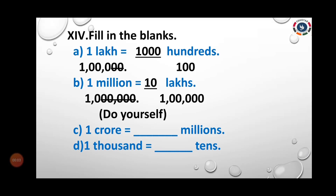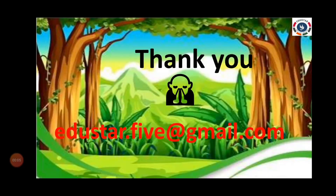Domulator 14 — fill in the blanks. A: 1 lakh = 1,000 hundreds — convert 1 lakh to numerals (1,00,000), then 100 has 2 zeros; cancel 2 zeros from the lakh, and the remaining gives the answer. B: 1 million = 10 lakhs. C: 1 crore = ___ million. D: 1,000 = ___ tens. The last two you do yourself. Complete the classwork, take a snap, and send all images through edstore.fi at gmail.com. Thank you children, thank you parents.